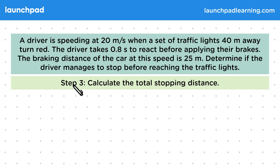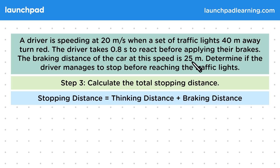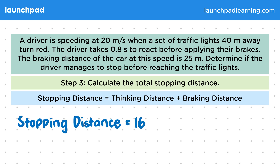Now we can do step three: calculate the total stopping distance using the equation stopping distance equals thinking distance plus braking distance. We just calculated that the thinking distance is 16 metres, and we're told that the braking distance is 25 metres. So the stopping distance is equal to 16 plus 25, which equals 41 metres.